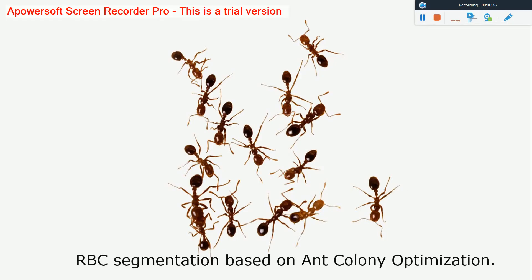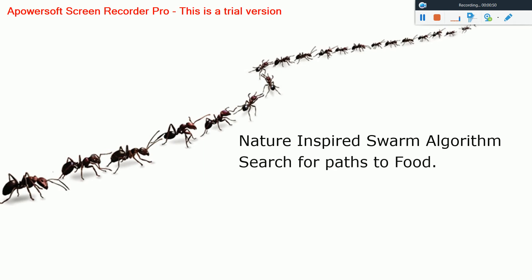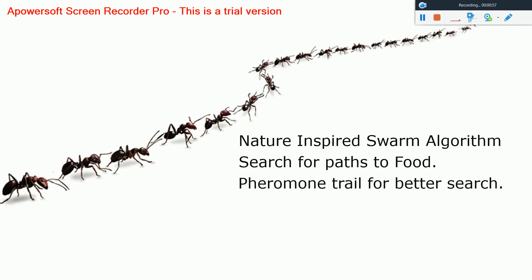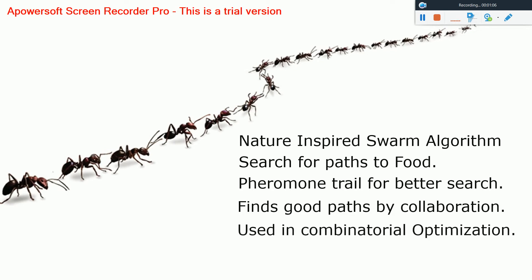I proposed an algorithm based on ant colony optimization for red blood cell segmentation in scanning electron microscopy images. Ant colony optimization is a nature-inspired swarm algorithm. In ant colony optimization, a colony of ants search for paths to food. They leave a pheromone trail for better search and eventually find good paths by collaboration. Ant colony optimization is widely used in many combinatorial optimization problems.